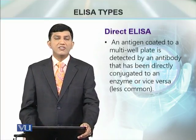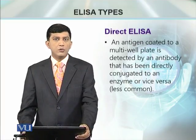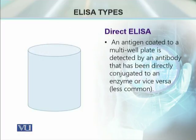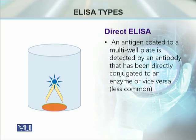Direct ELISA is a simple and faster method to determine the presence of any antigen. In this method, our multi-well plate is coated with an unknown antigen. Then this antigen is detected by an antibody, and this antibody is conjugated with an enzyme. We add the sample on it and incubate it for some time. The antigen binds with the base of the well, then we add the specific antibody, which is coupled or conjugated with the horseradish peroxidase enzyme.